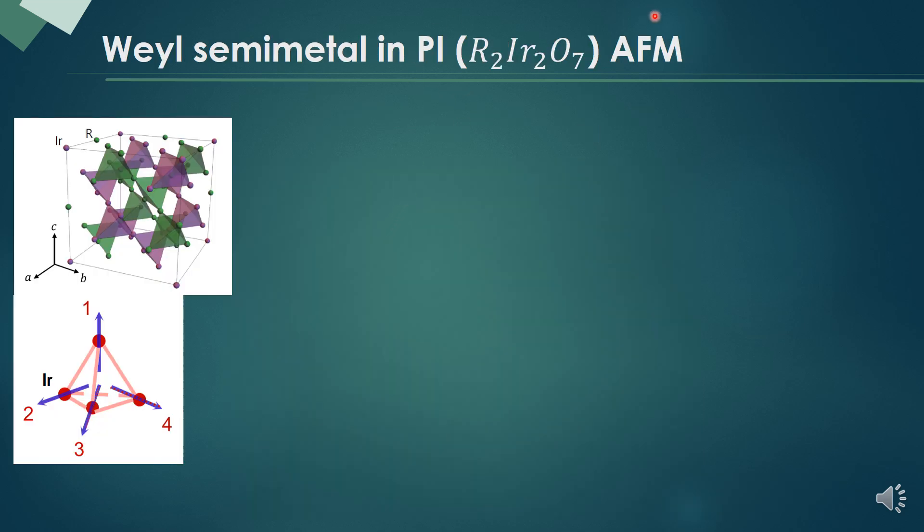Let me introduce pyrochlore iridate antiferromagnet shortly. The chemical formula is R2Ir2O7, where R are rare earth elements. The structure is composed of two chains of corner-sharing tetrahedrons, which are composed of rare earth and iridium ions.